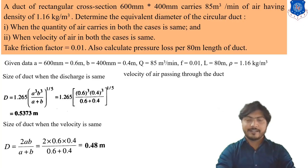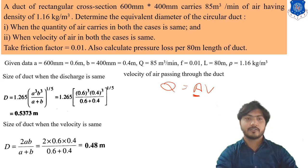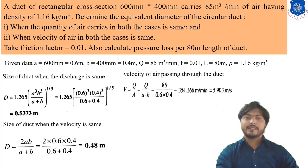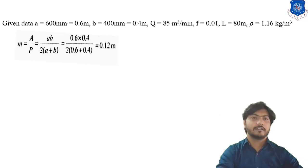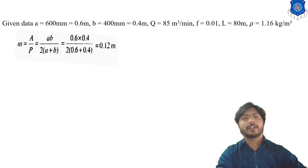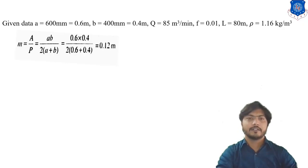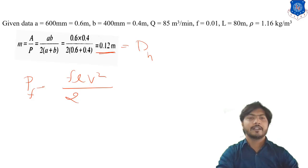Next, calculate the hydraulic mean depth DH. DH = AB / (2(A + B)), putting in all values: DH = 0.12 m. The pressure formula is: PF = f × L × V² / (2 × DH). Putting all values — friction factor, length, velocity, and hydraulic mean depth — we calculate the pressure loss due to friction.